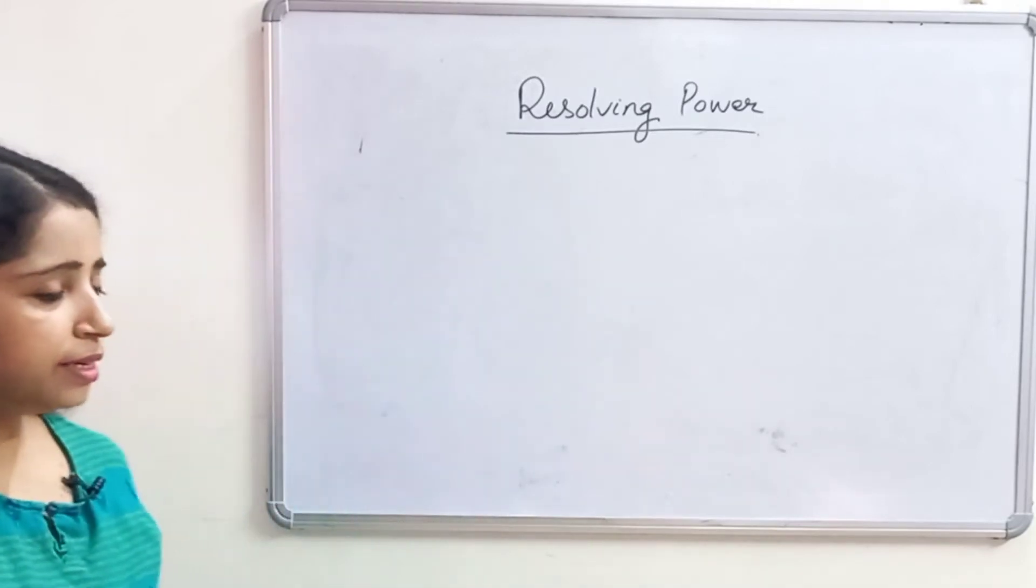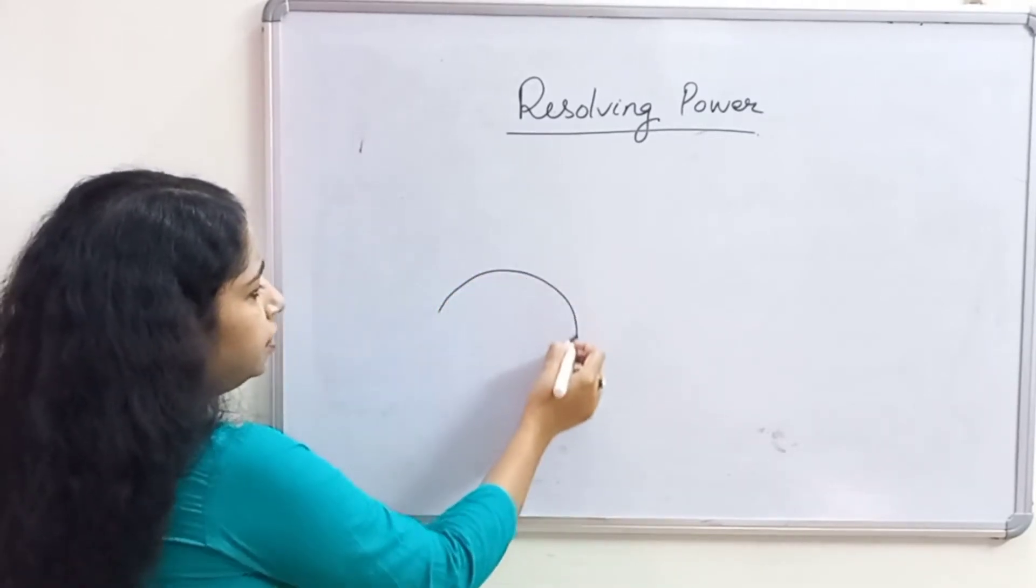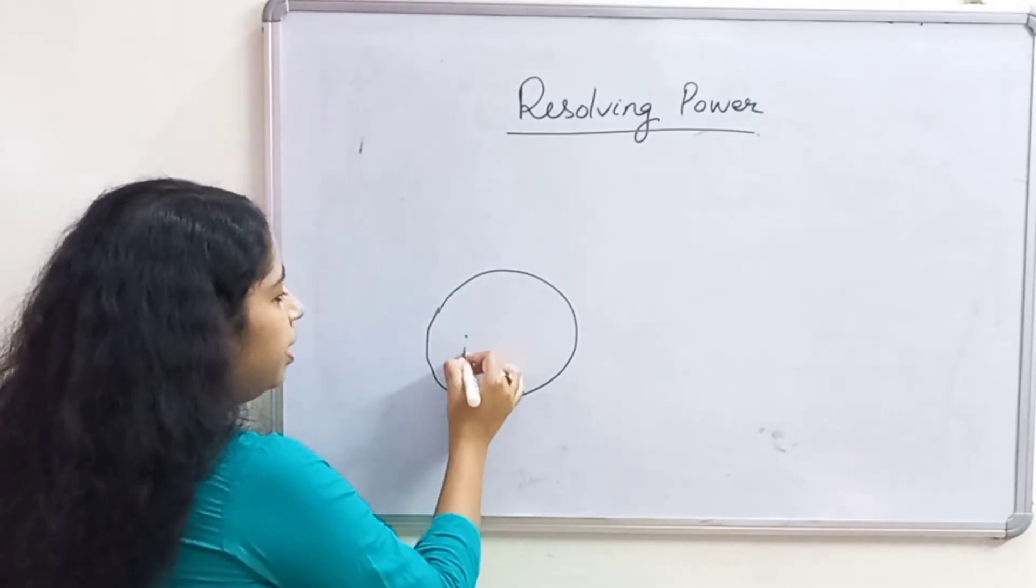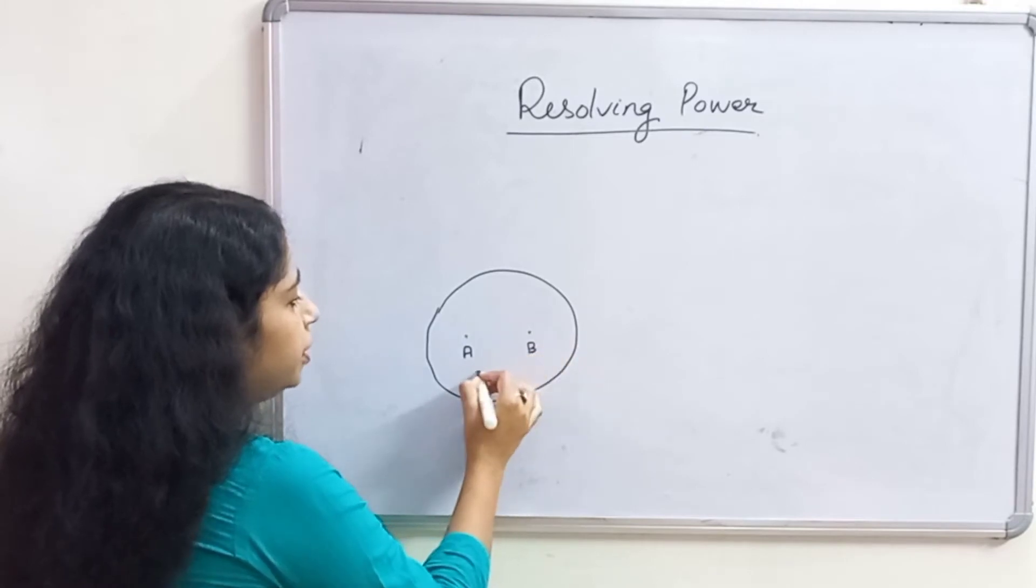Now, let us understand it with the help of an example. Here I have a specimen. Suppose this is a specimen and A and B are two points, closely spaced points.